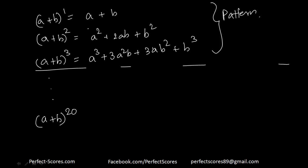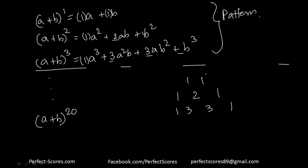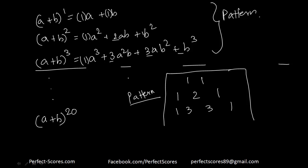So we have to observe what is actually happening. If you look at the coefficients of the variables, for power 1 you have 1 and 1, for power 2 you have 1, 2, and 1, and for power 3 you have 1, 3, 3, and 1. Writing just the coefficients: 11, then 121, then 1, 3, 3, 1. This pattern is nothing but known as Pascal's triangle.